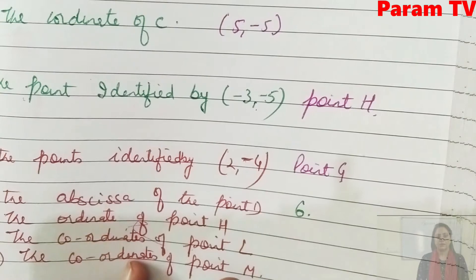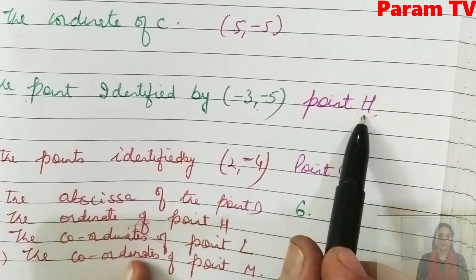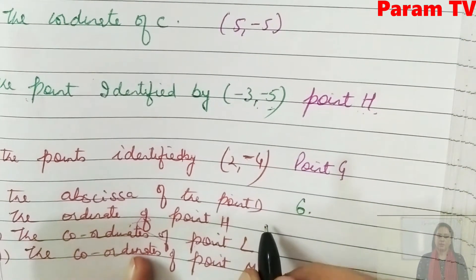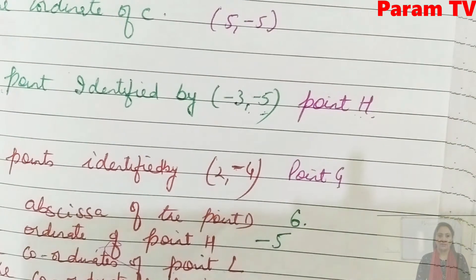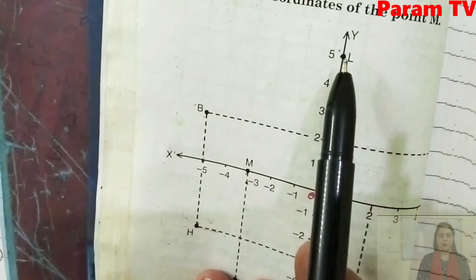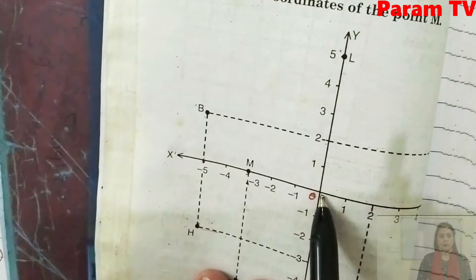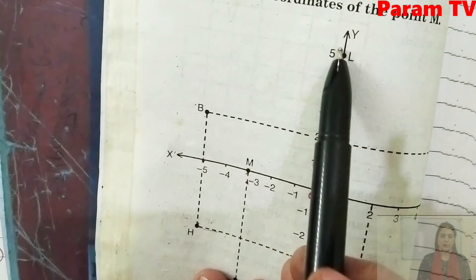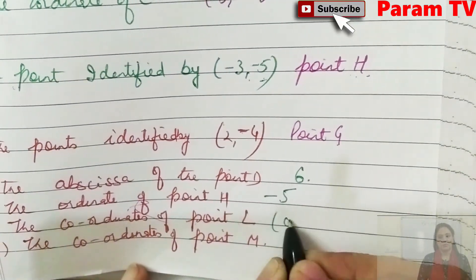Next: the abscissa of point D. Abscissa is the value of x. Look at point D and its abscissa — it is 6. Abscissa of point D is 6. Next: ordinate of point H. Ordinate means the y value. Point H's y value is minus 5. Next: coordinates of point L. L lies on the y-axis, so x is 0. The coordinates of L are (0, 5).